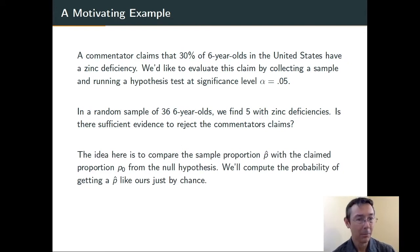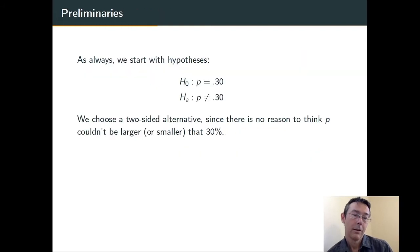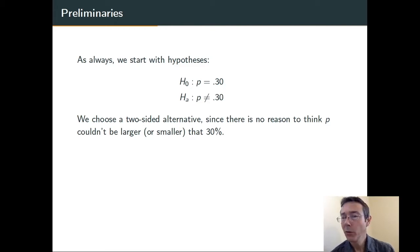We're going to compare p-hat, the sample proportion that we got — that's 5 out of 36 — with the proportion claimed under the null hypothesis, what the commentator claimed was true. We'll call that p-sub-0, or p-naught. The null hypothesis is that the population proportion is 30%, 0.30. The alternative hypothesis will be just that it is not 0.30. We have no reason in this problem to assume that the population proportion might be greater than 30% or less than 30%, so we've got to take both into account.